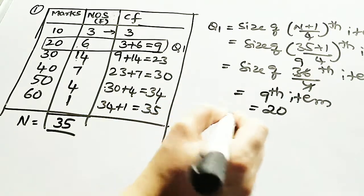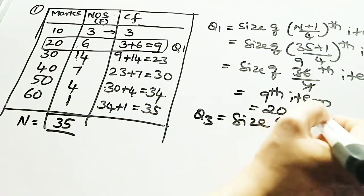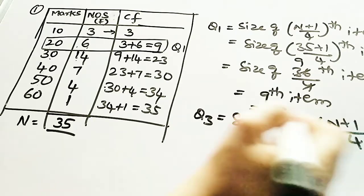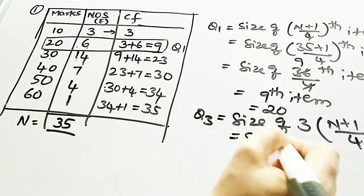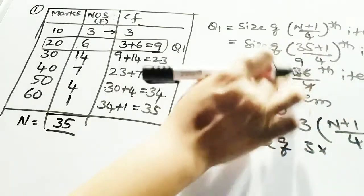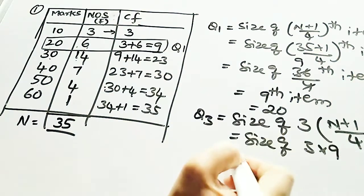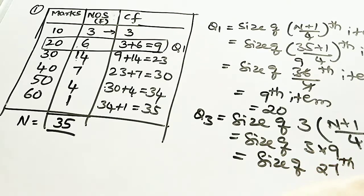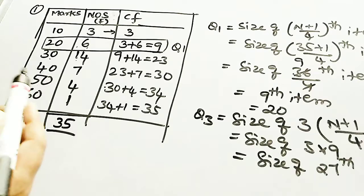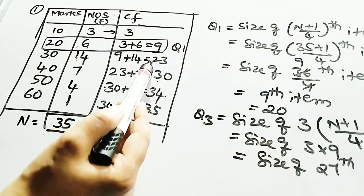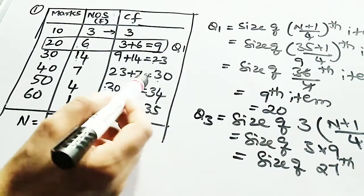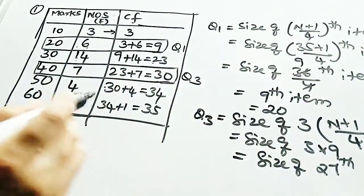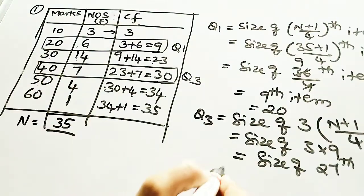Now let us find Q3. Q3 is the size of the 3(n+1)/4th item. Since (n+1)/4 gives 9, we get 3 × 9 = 27, so we need the 27th item. In the cumulative frequency table, 27 does not appear directly — you cannot consider less than 27, only more than 27. The next value is 30, so Q3 corresponds to marks 40.